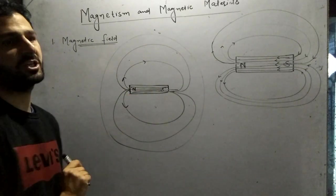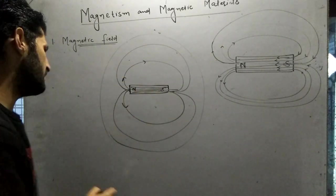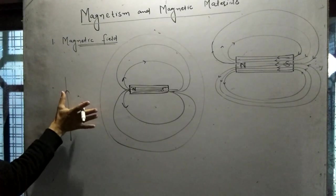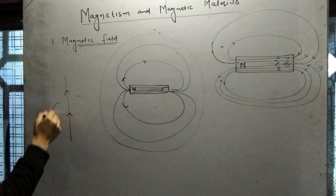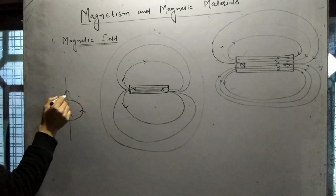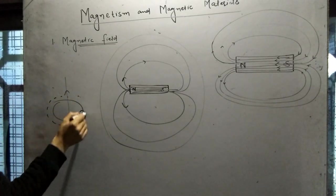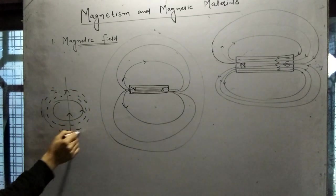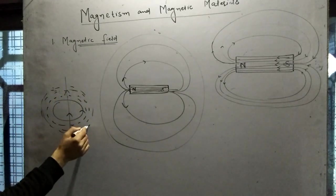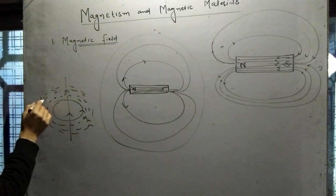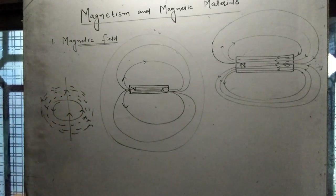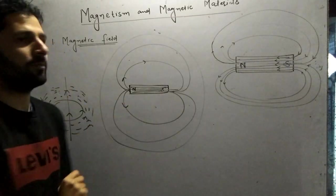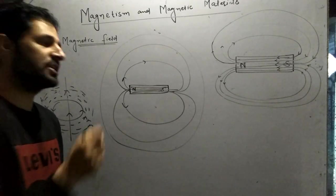The magnetic field is the modification of space around the magnet or current-carrying conductor. For a current-carrying conductor, the right-hand thumb rule applies — the curl of the fingers gives the direction of the magnetic field. This space around the current-carrying conductor or the bar magnet, within which its influence can be felt, constitutes the magnetic field.